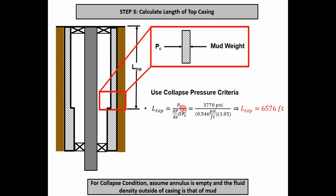Step three is to calculate the length of the top casing string, taking into account the collapse pressure. We get the collapse pressure of the top casing from the handbook. Using the collapse pressure formula rearranged to solve for length — taking collapse pressure divided by the mud hydrostatic pressure gradient times the design factor — we size the top casing to 6,576 feet.